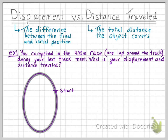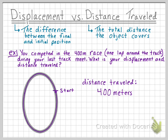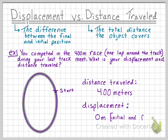Let's compare the distance traveled and the displacement for the 400-meter race. The distance traveled is simply 400 meters, since you ran 400 meters around the entire loop of the track. The displacement, though, is actually equal to 0 meters, because the start and end points of the 400-meter race are in the exact same position.